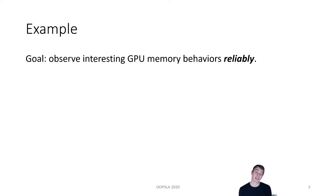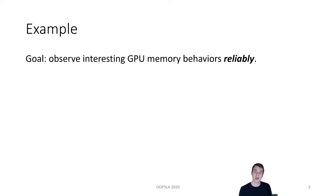As you may have guessed from the title of our paper, our ultimate aim is to improve the way that vendors and developers of graphics processing units, or GPUs, test and verify the implementations of GPU memory models and compilers. In practice, that aim boils down to one concrete goal: observing interesting behaviors reliably. To see the challenges presented by this goal, let's dive right into the process of empirical testing.